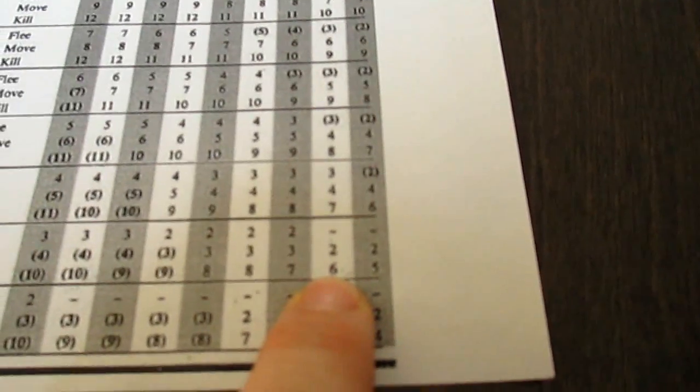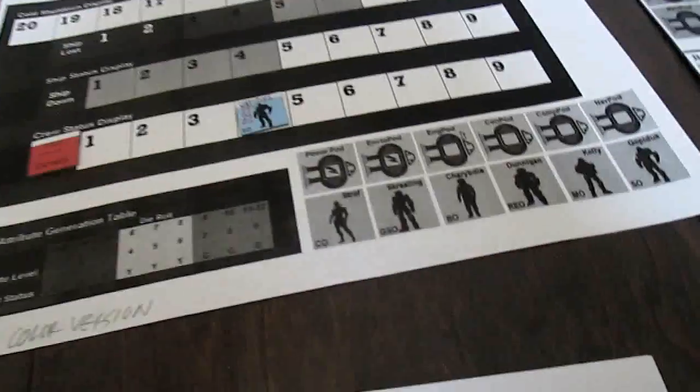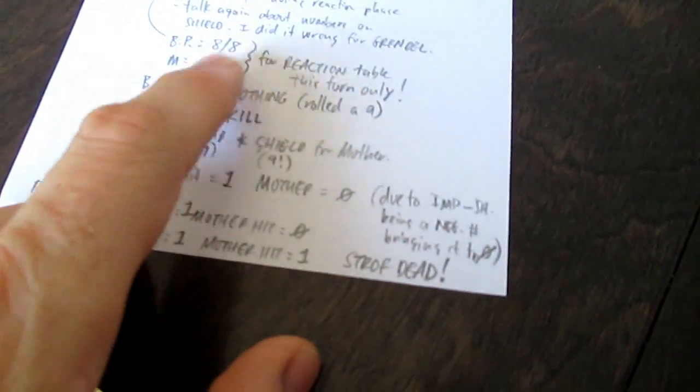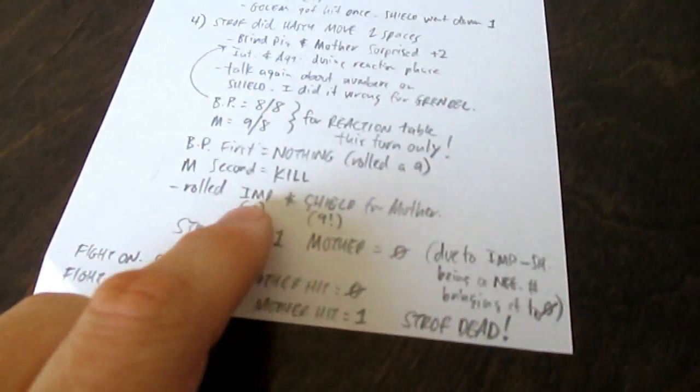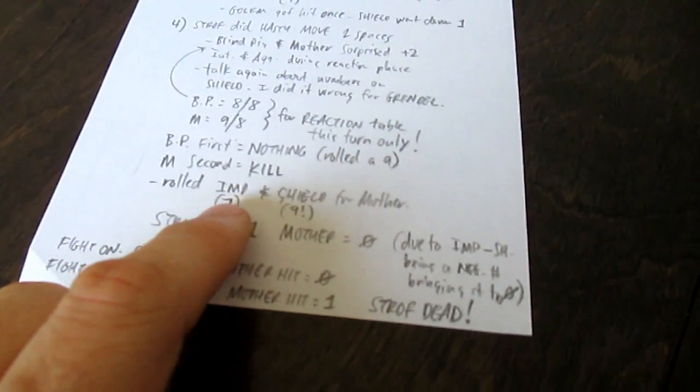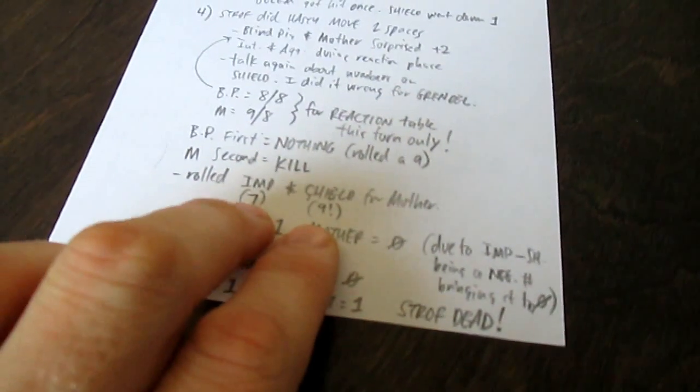Anything over a six means that nothing happens. So that's what occurred with the blind pig. The mother unfortunately got really pissed off and went for the kill.